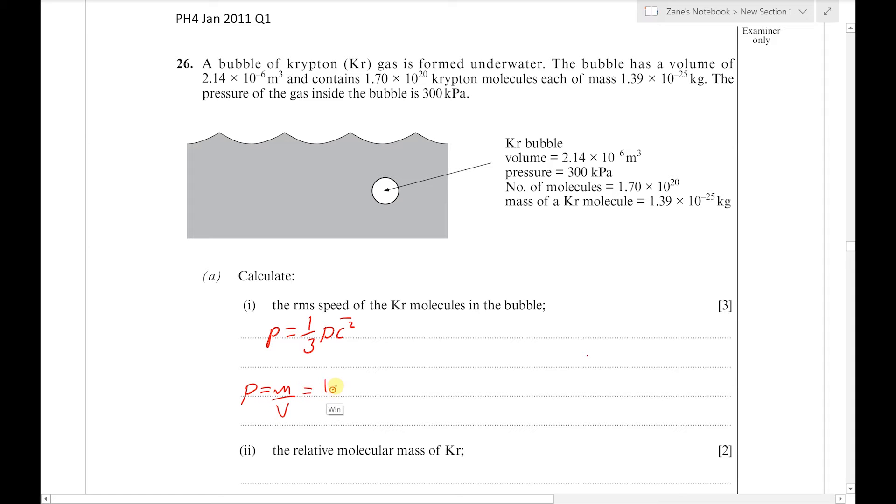The total mass of the gas is the number of molecules, 1.7 × 10²⁰, times the mass of each molecule, 1.39 × 10⁻²⁵, divided by the volume of 2.14 × 10⁻⁶ m³. That gives us a density of about 11 kg/m³.